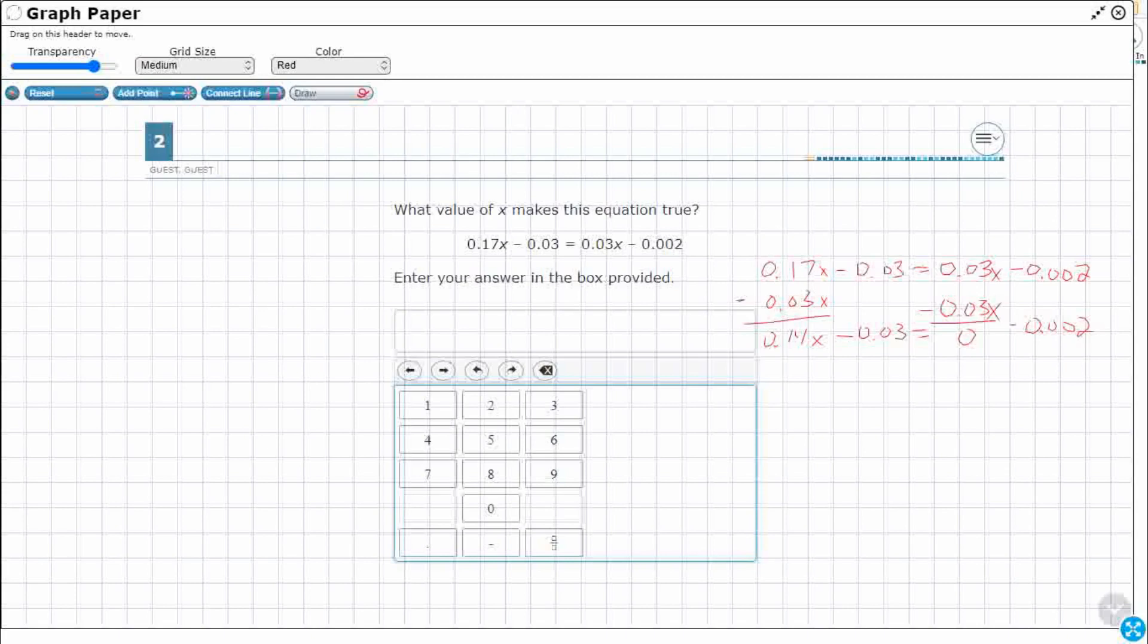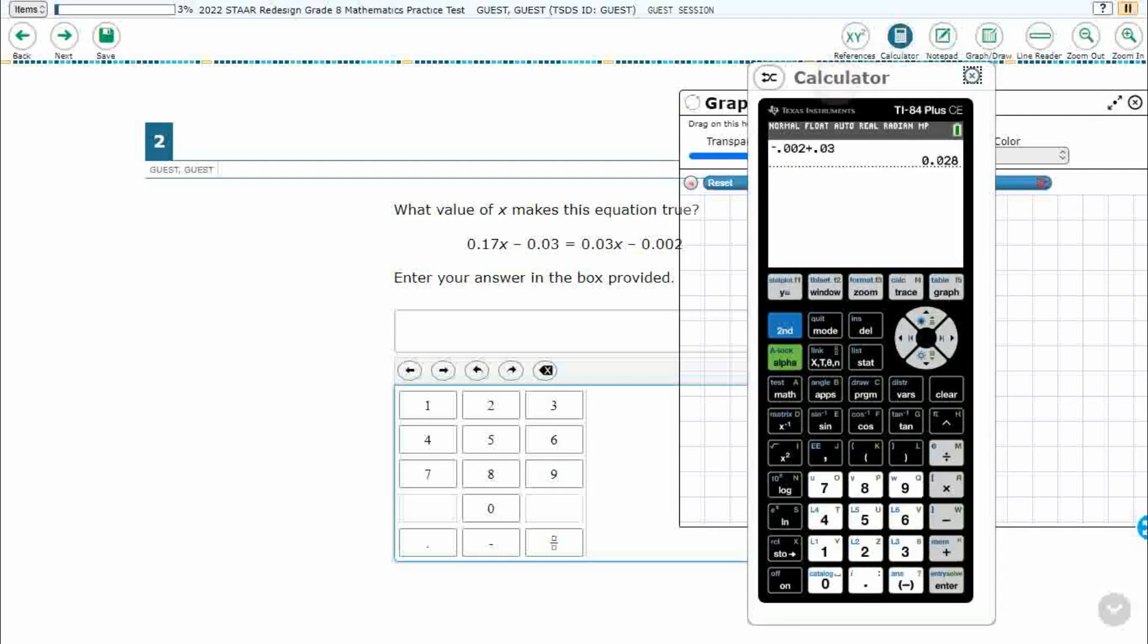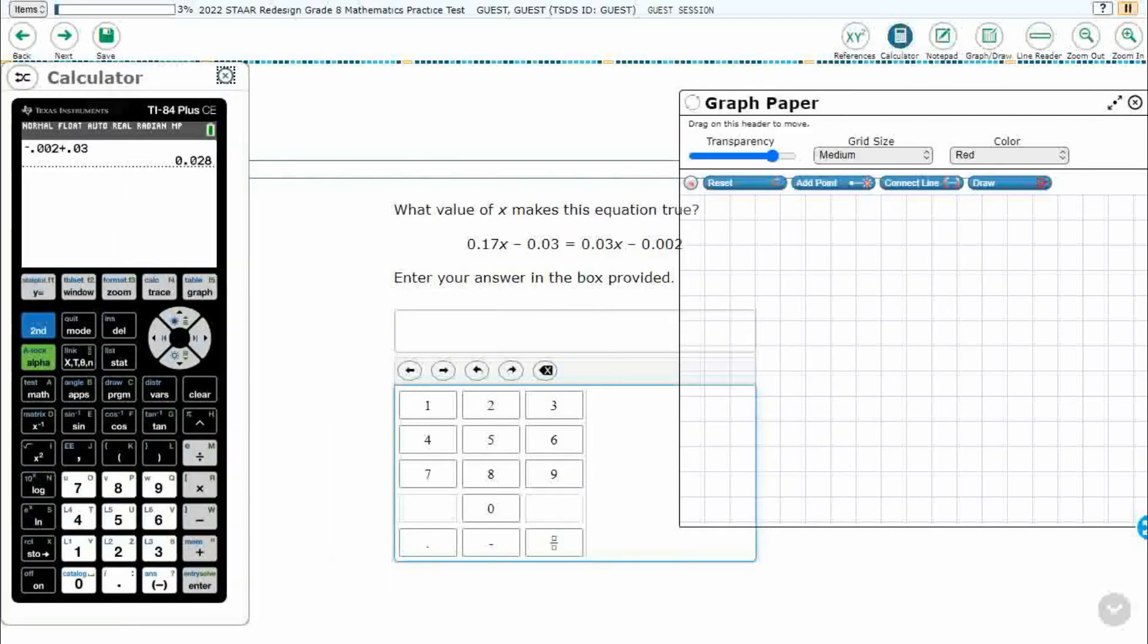Since I've got my variable over on the left side, I'm going to add 0.03 to both sides, but now we're getting a little bit tricky. We could do 0.03 minus 0.002, but we also have the calculator. So, let's just go ahead and use that. Let's pull that over here a little bit.